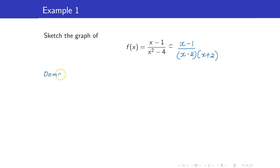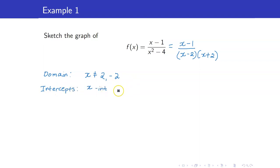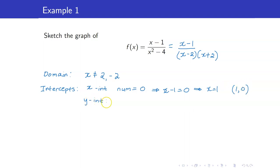First, let us get the domain. For our domain, we just have to make sure that our denominator is not equal to 0. Hence, x should not be equal to 2 and negative 2. For our intercepts, for our x-intercepts, we set the numerator to 0, which means that x is equal to 1. This gives us the point (1, 0). For our y-intercept, we set x to 0, so we get y equals 1/4. This corresponds to the point (0, 1/4).